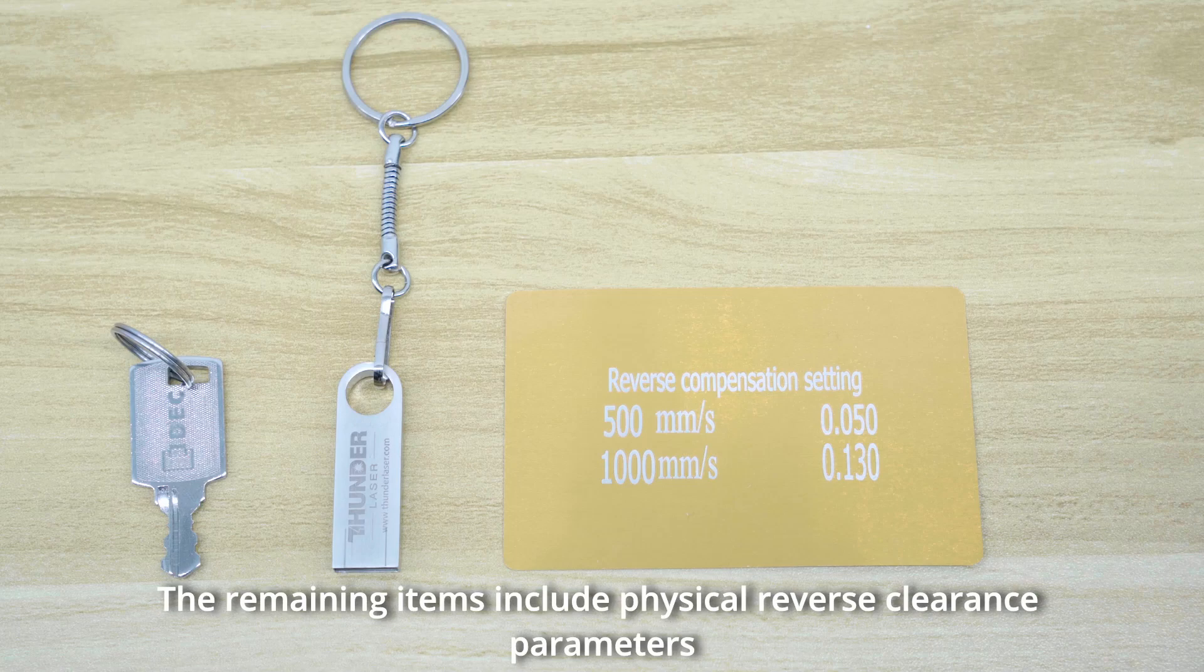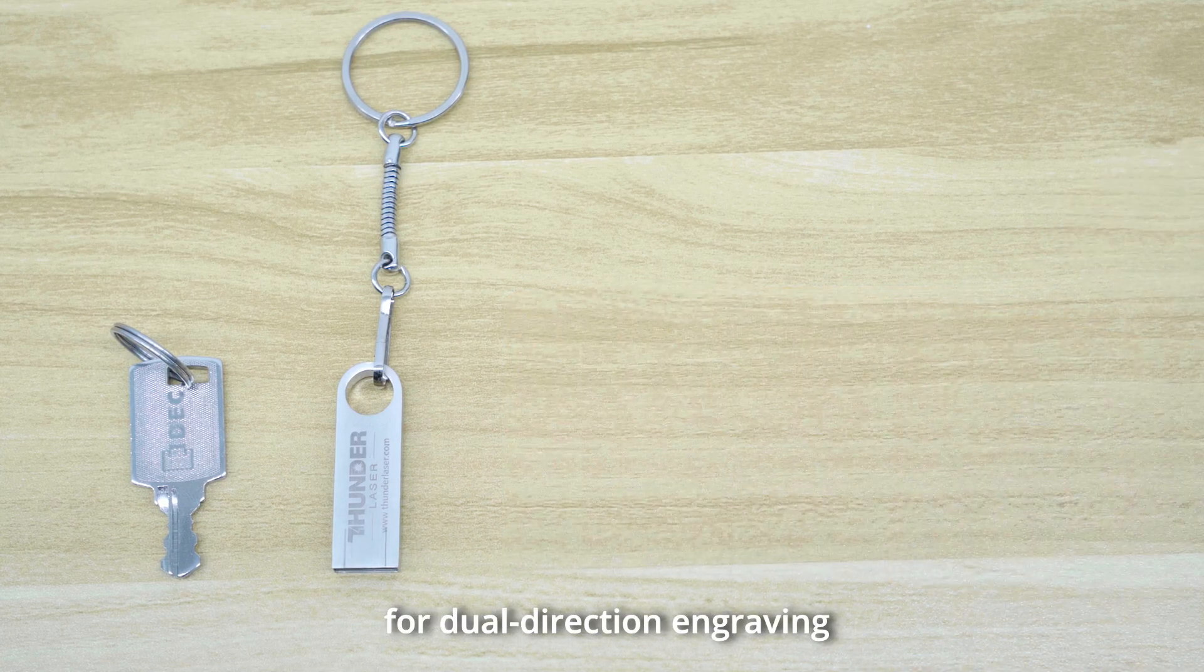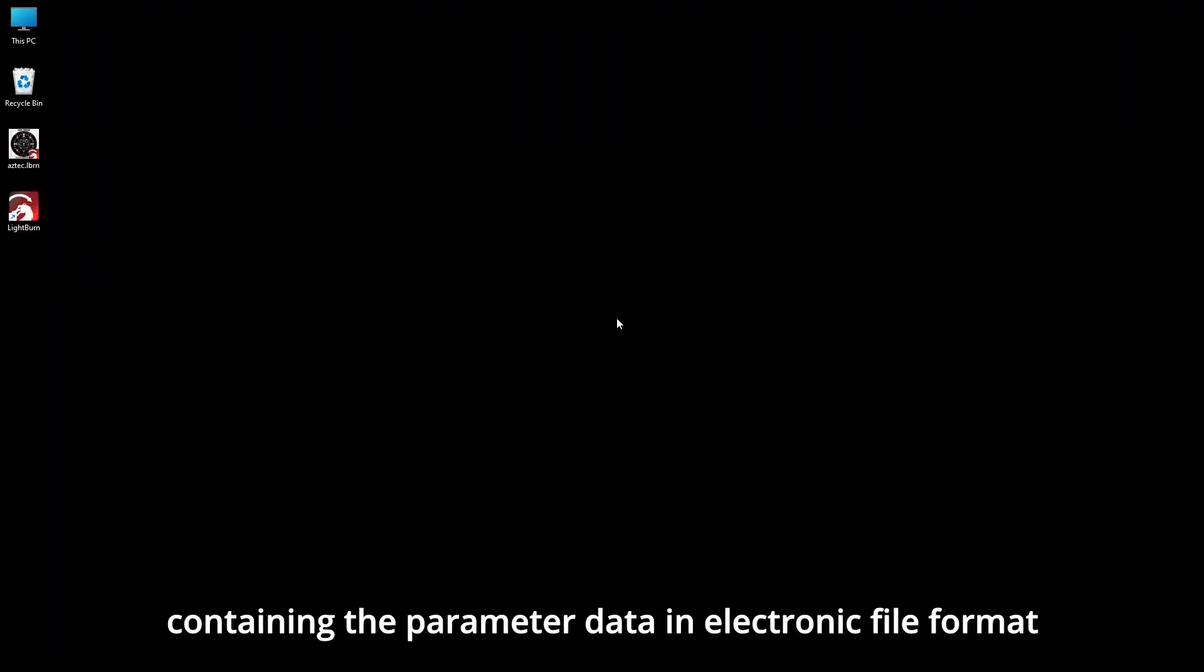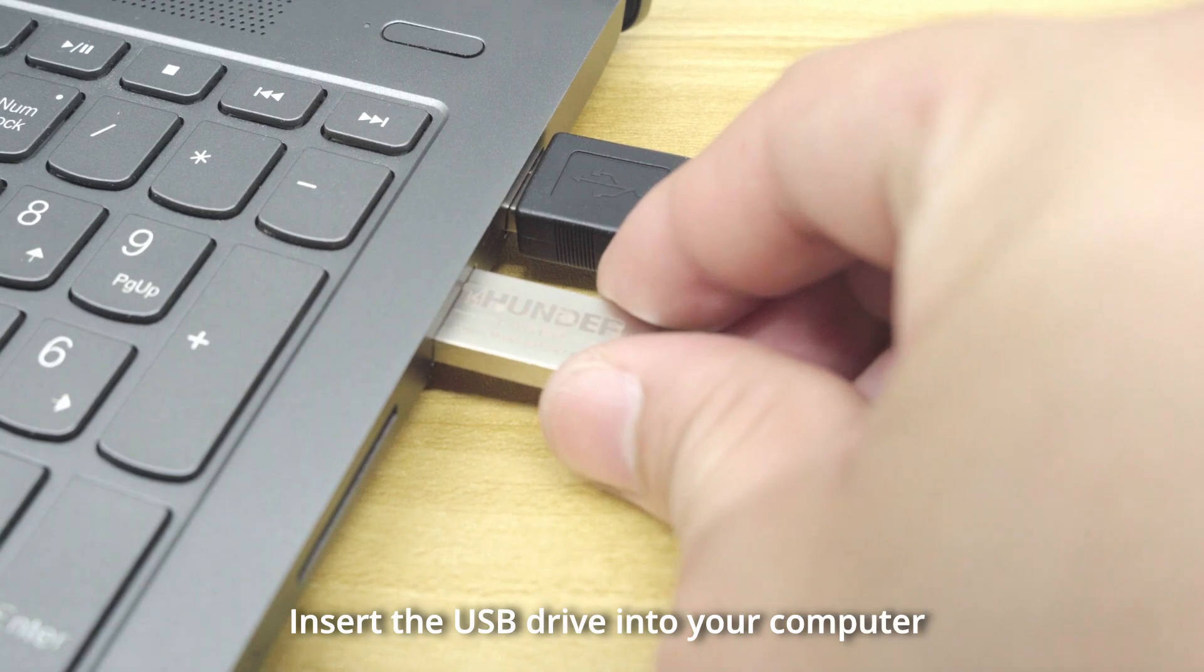The remaining items include physical reverse clearance parameters for dual direction engraving, and a USB drive, containing the parameter data in electronic file format. Insert the USB drive into your computer.